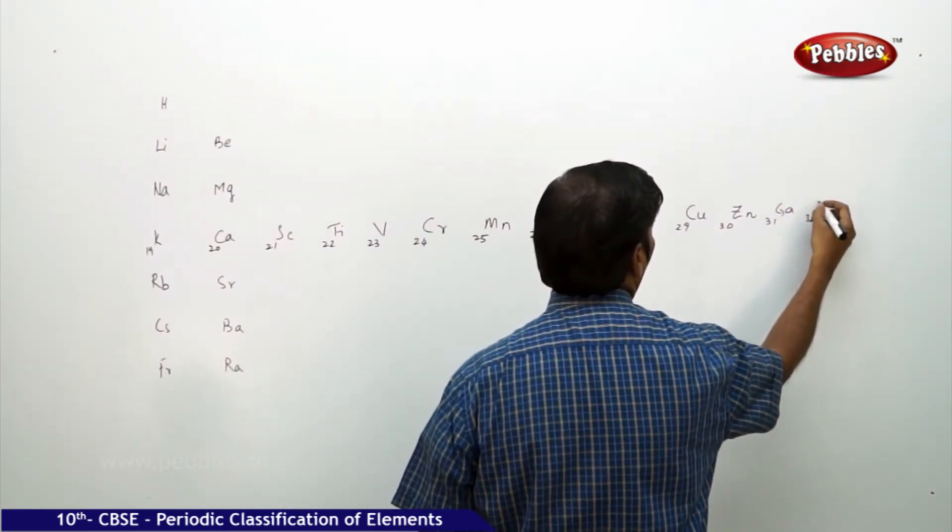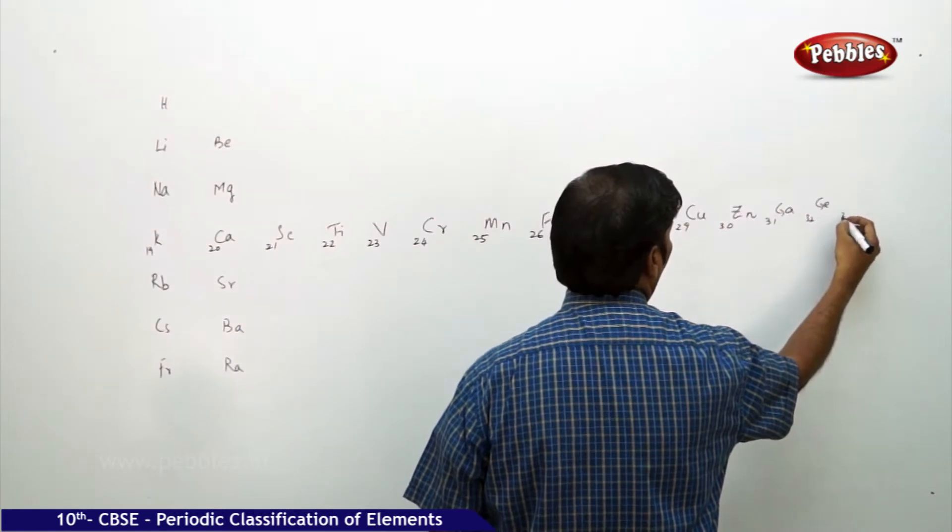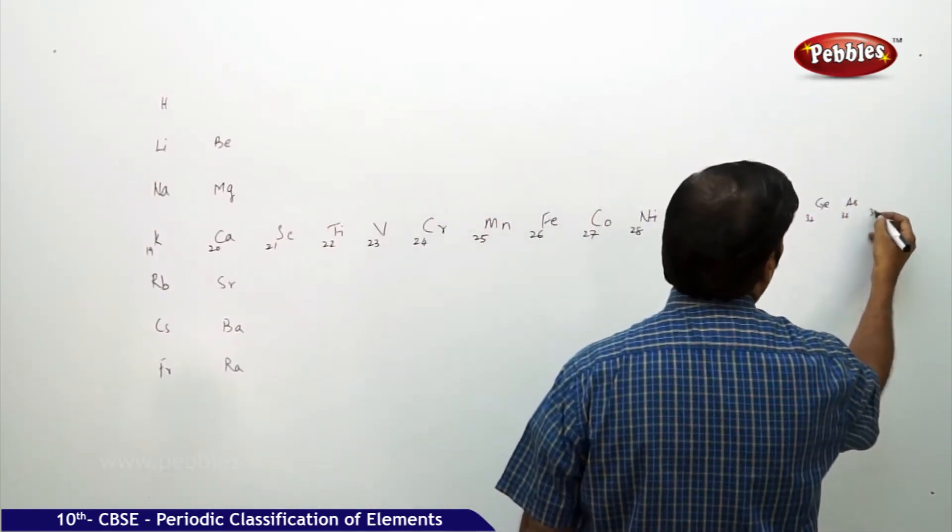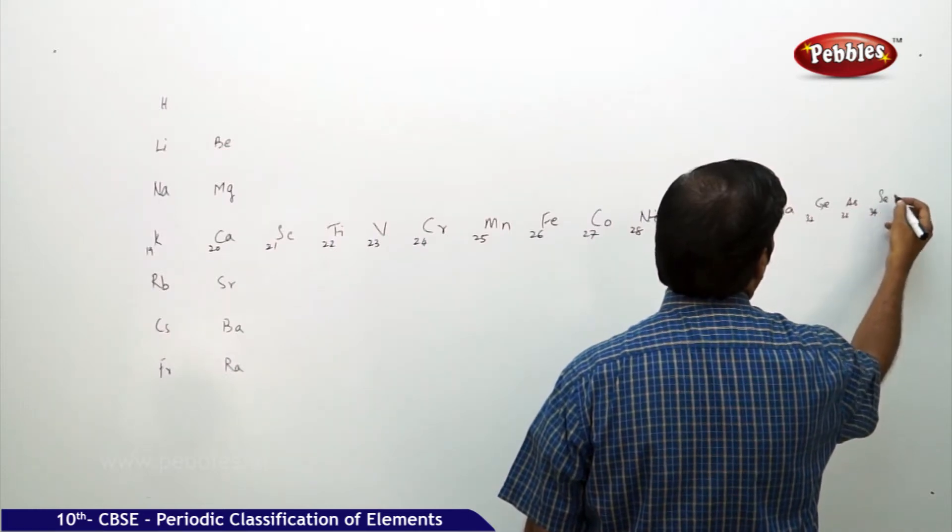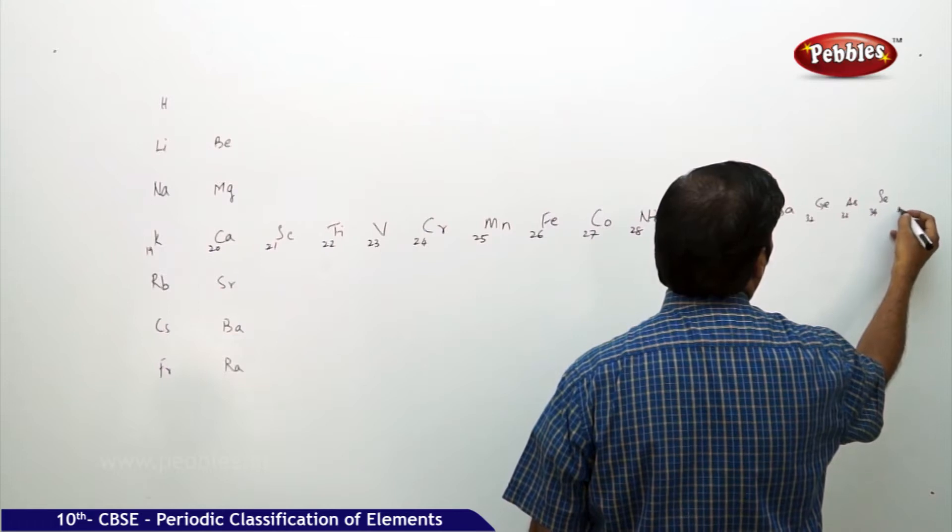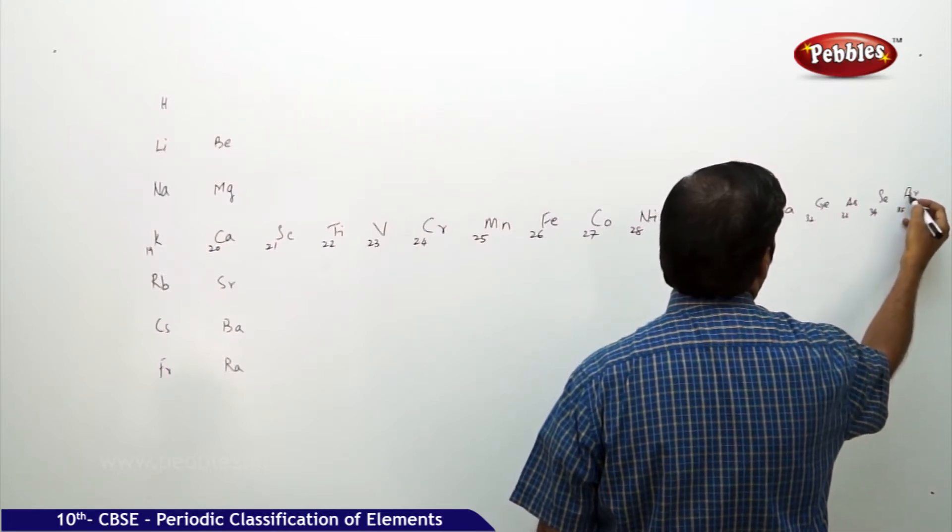32 is Germanium, 33 is Arsenic, 34 is Selenium and 35 is Bromine.